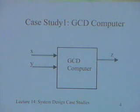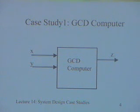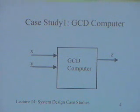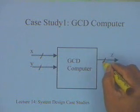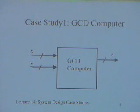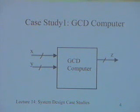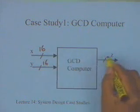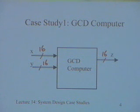The first example I am going to take up is a GCD computer. What is required is to find the greatest common divisor between two numbers x and y, with the result available on z. A block diagram showing inputs and outputs is the starting point for any design. For hardware systems it is also important to know the width of the inputs — whether they are 8-bit, 16-bit, signed, unsigned, and so on. For our discussion we will consider only positive unsigned numbers and let us say they are 16 bits.